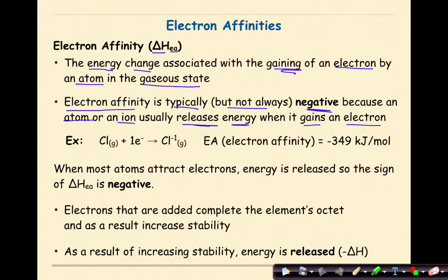For example, if I have a chlorine atom with seven valence electrons and it gains one electron, it's going to become a chlorine ion with its full octet and be much more stable. In this case, the electron affinity is negative 349 kilojoules per mole.